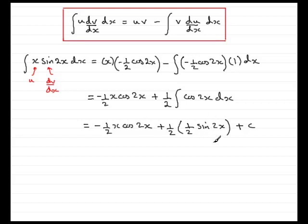So I prefer really to put the positive term first. So we've got a quarter sine 2x, and then we have the minus a half x cos 2x, and then again we've got the plus c.